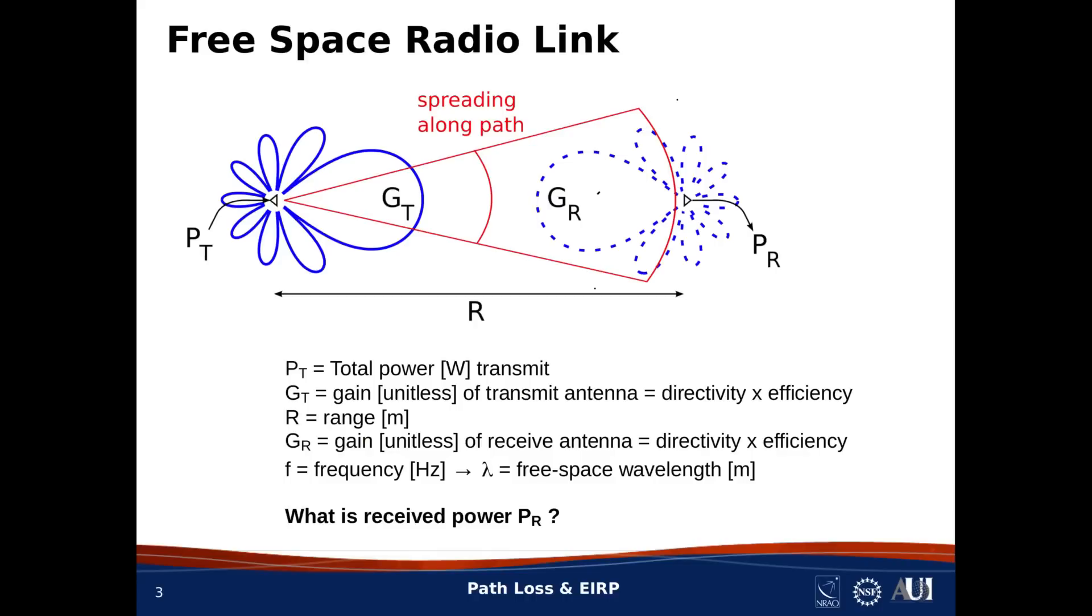Here's a cartoon of a free space radio link, as well as definitions of the parameters that we'll use to describe this link. Going from left to right, we have the power, P sub T, applied to the transmit antenna. The transmit antenna has a gain, G sub T.